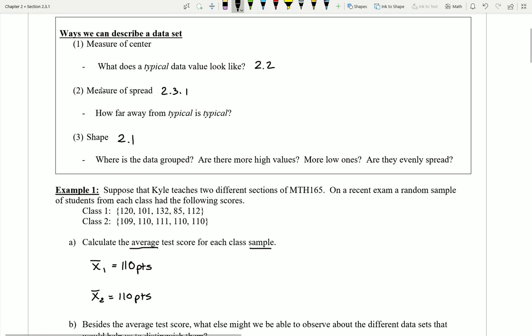And this is the idea here of measures of spread, or sometimes what are called measures of dispersion, or measures of variation. We want to know how far away from a typical value is typical, or how spread out is the data set from a typical value.